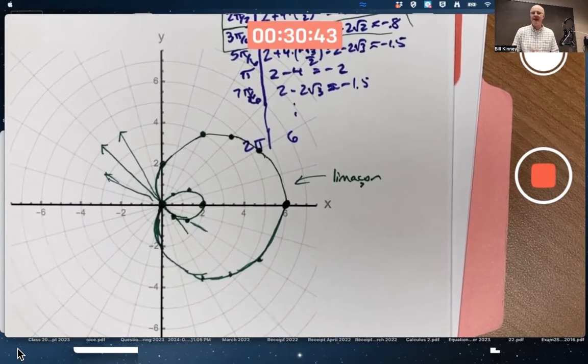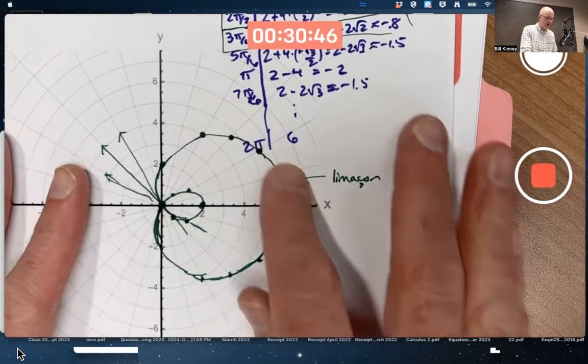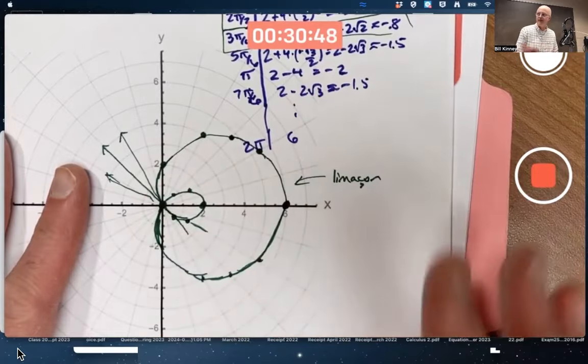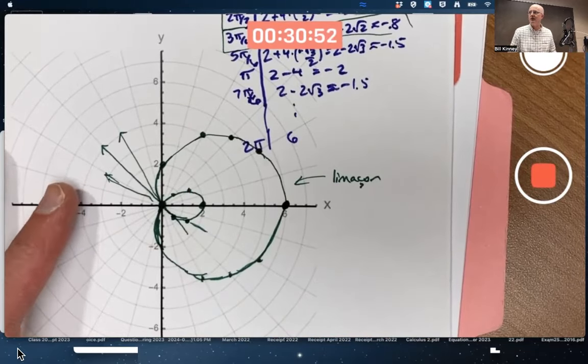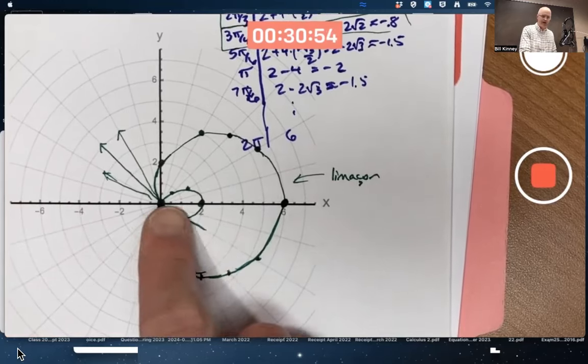Though you could imagine maybe, you know, this could be a parking lot and you could drive your car like this or you could walk like that if you wanted to. So you could argue there's an application to motion. And if it was petals you were making, yeah, you could walk or drive your car like that too.